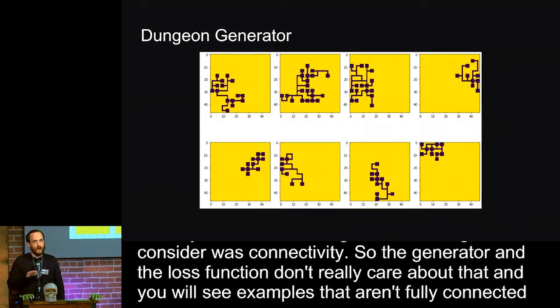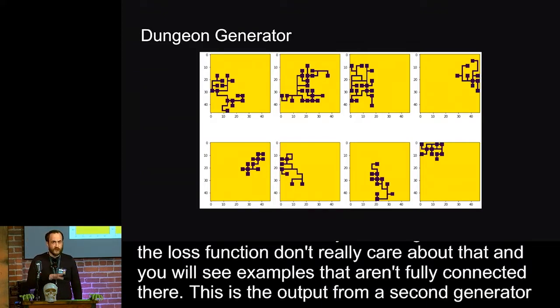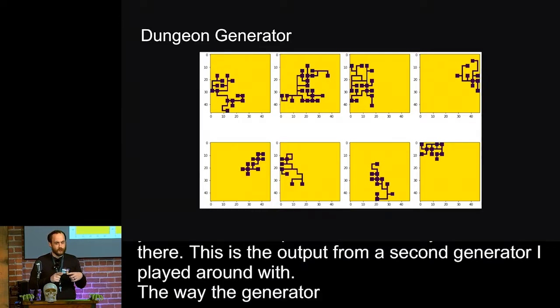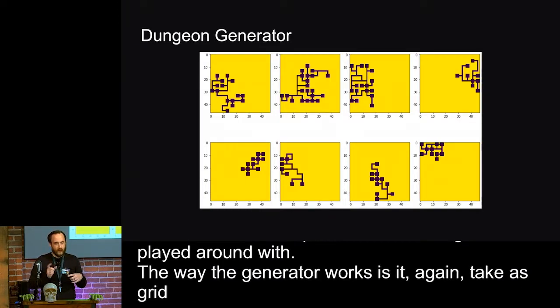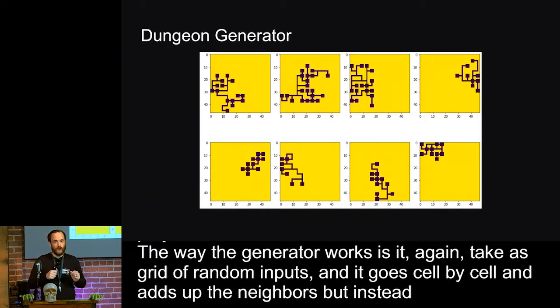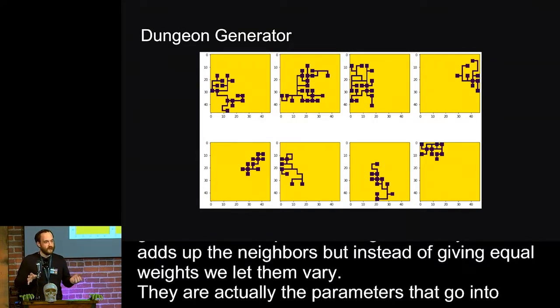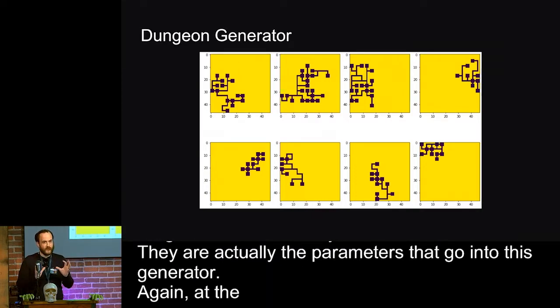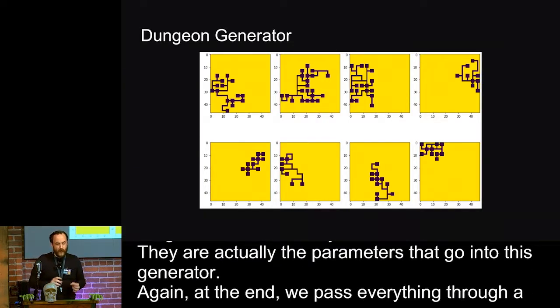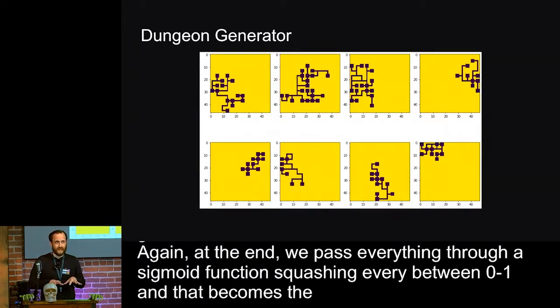This is the output from a second generator that I played around with. The way the generator works is, again, it takes a grid of random inputs, and it goes cell by cell. It adds up all the neighbors. But instead of giving those neighbors equal weights, we let the weights vary. In fact, those weights are actually the parameters that go into this generator. And, again, at the end, we pass everything through a sigmoid function, so it squashes everything to between zero and one. And that becomes the output of this generator. This generator has like 36 magic numbers in it.